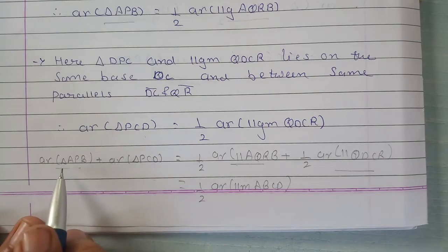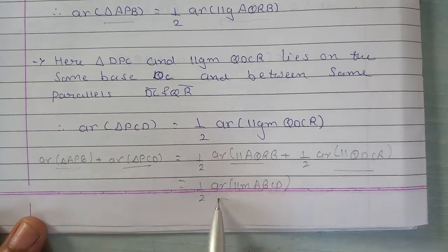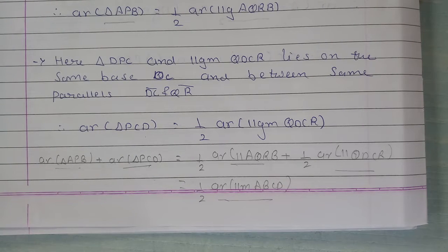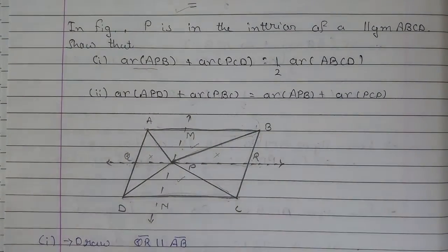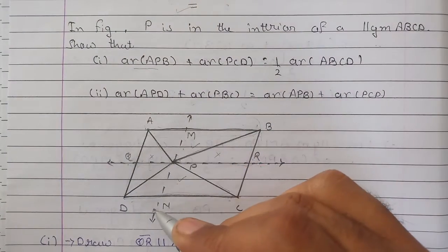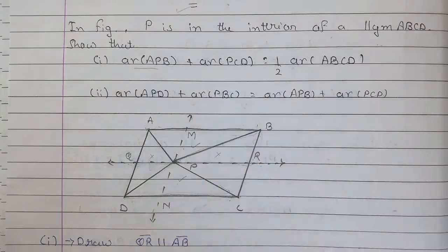So, APB plus PCD is equal to half ABCD. That's what we need — first part ka answer mil gaya hai. Ab hum construct karenge MN parallel to AD.